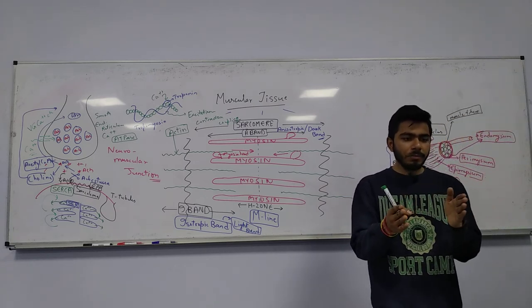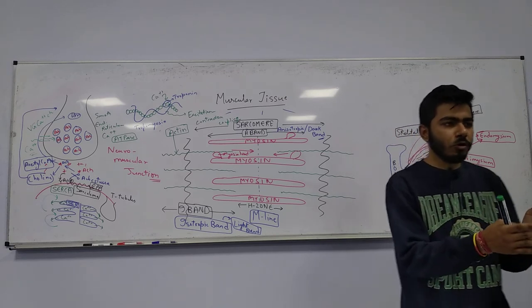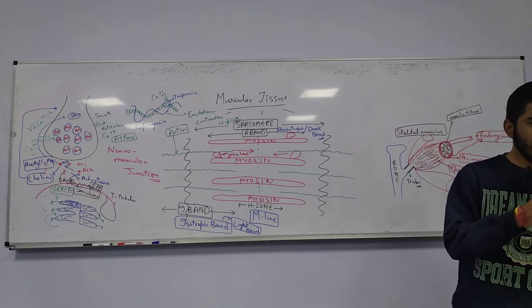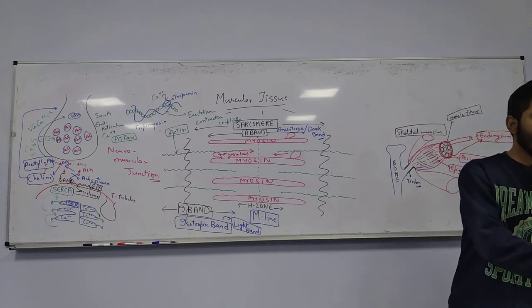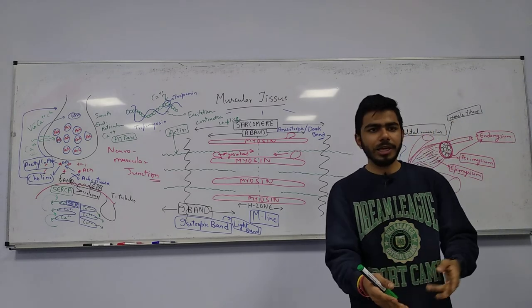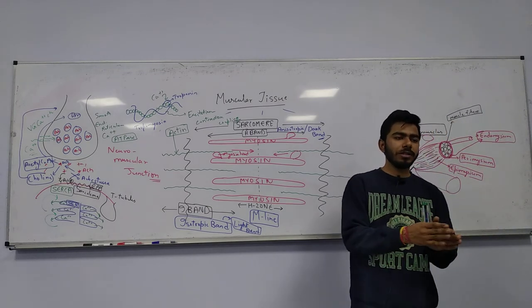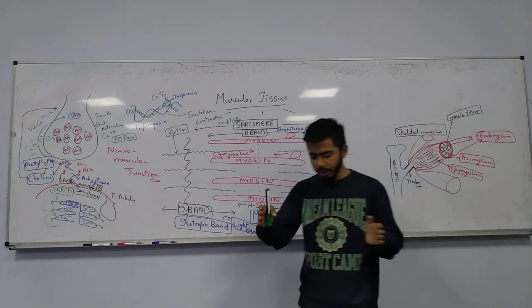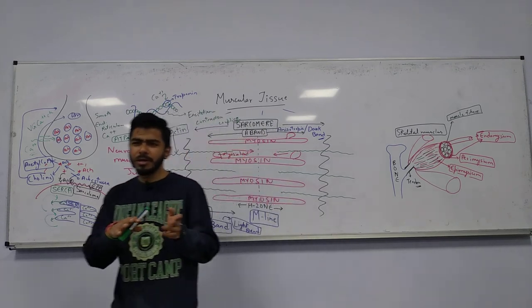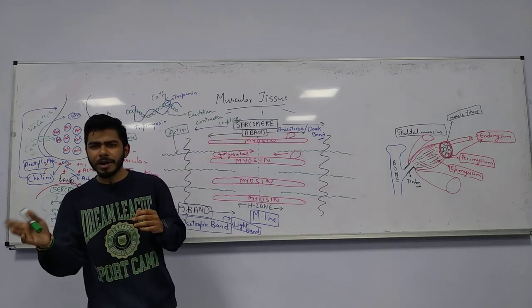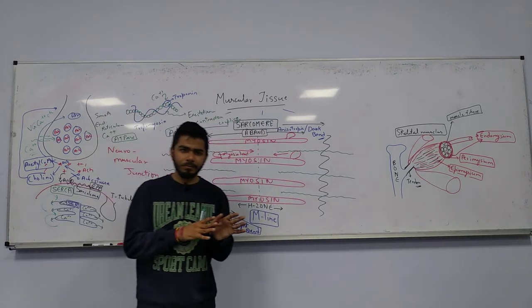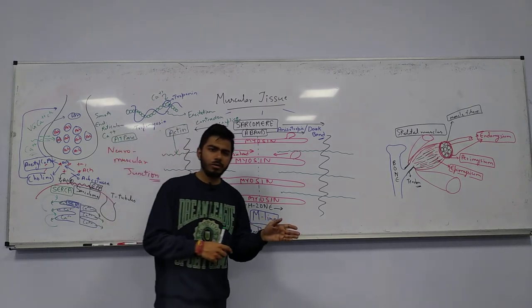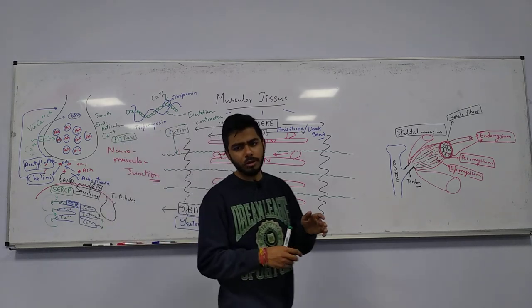White muscle fibers are more powerful but shorter-acting; red muscle fibers are less powerful but longer-acting. That is the difference between red and white muscle fibers. Now we will move on to MCQs for muscular tissue.